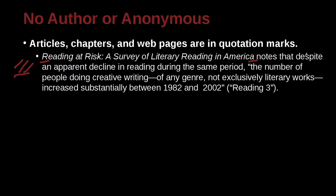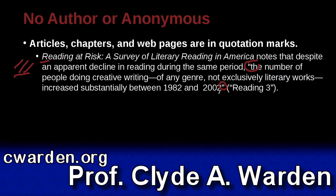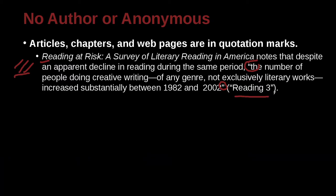Inside this book, it notes that despite an apparent decline in reading during the same period, and here's a quotation: 'the number of people doing creative writing of any genre, not exclusively literary works, increased substantially between 1982 and 2002.' End of quotation. So we need to say where that quotation came from. It is inside that book, but we need to be specific. Here it's the chapter inside the book, which is called 'Chapter Reading Three.' We know it's a chapter because it has quotation marks around it.